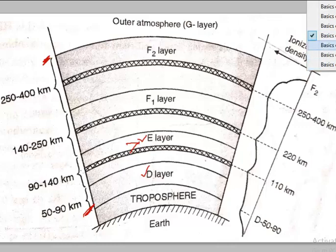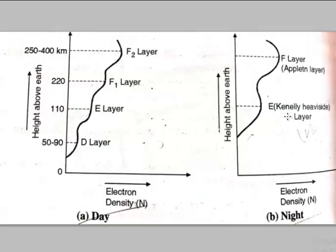Another important point is that the composition of the ionosphere changes with respect to time. For example, during the daytime the D layer is present, the E layer is also present, and the F1 and F2 layers are present in both day and night.